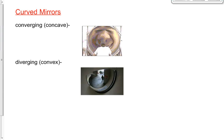We've got two types of curved mirrors, and today we're going to focus on the analysis of those curved mirrors. The first kind is what we call a converging mirror, also known as a concave mirror.